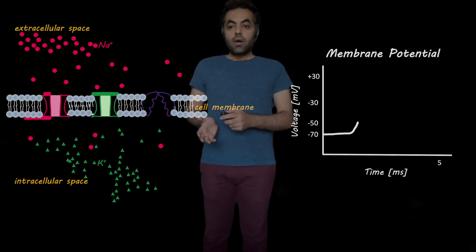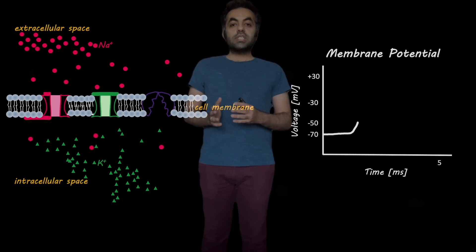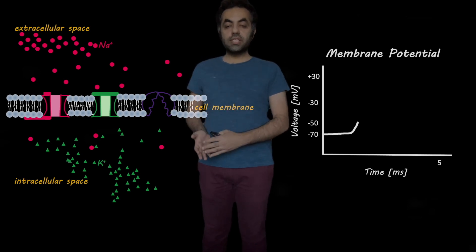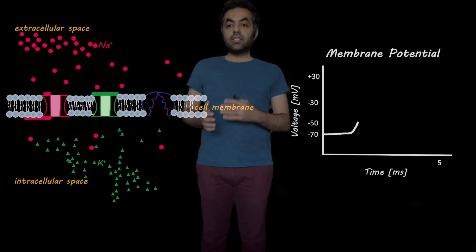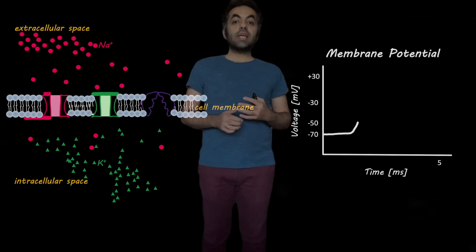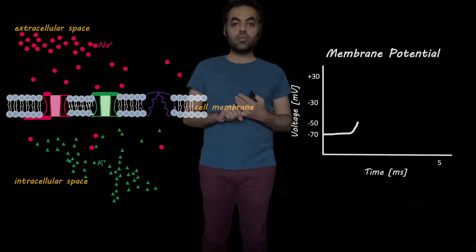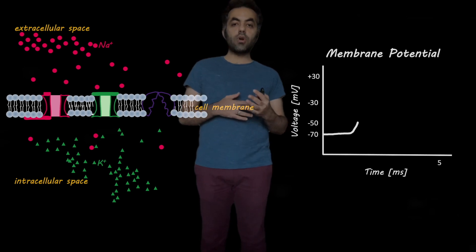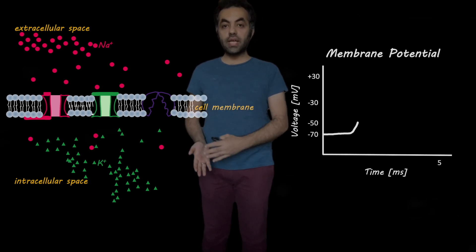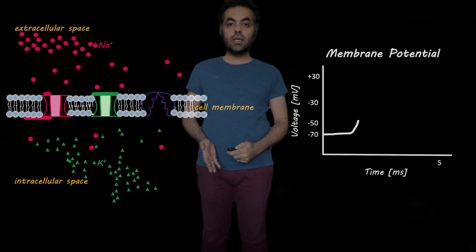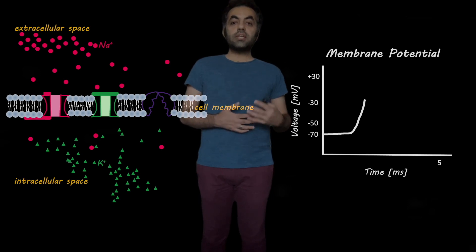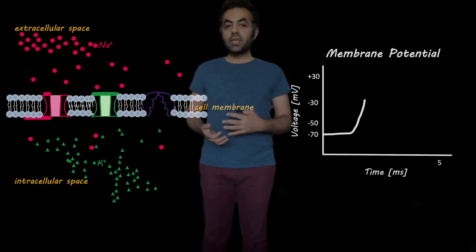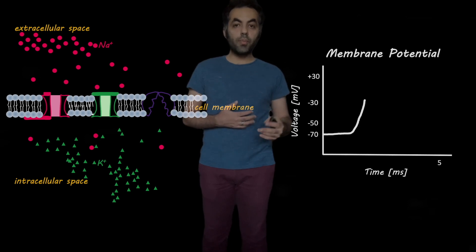Now the sodium ions can flow from the extracellular space to the intracellular space. Remember that sodium ions have positive charges, so we have a flow of positive charges from the extracellular space to the intracellular space. This increases the membrane potential from minus 50, for example, to minus 30.